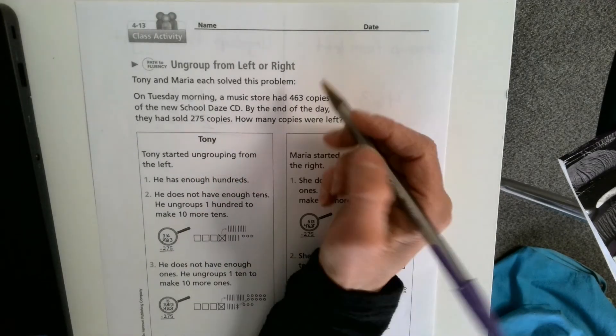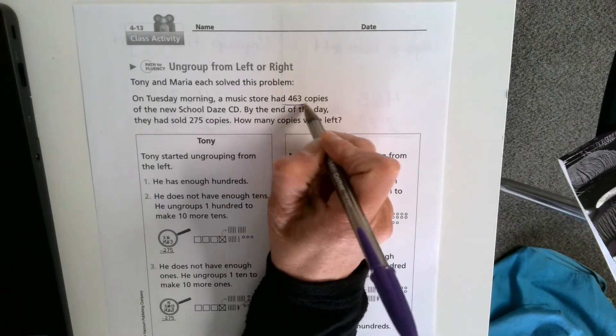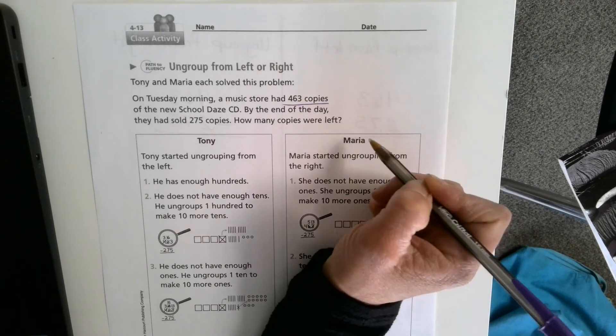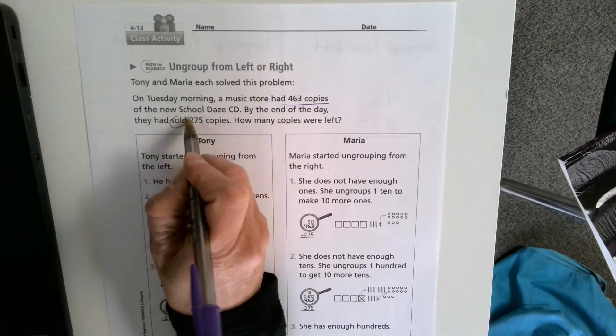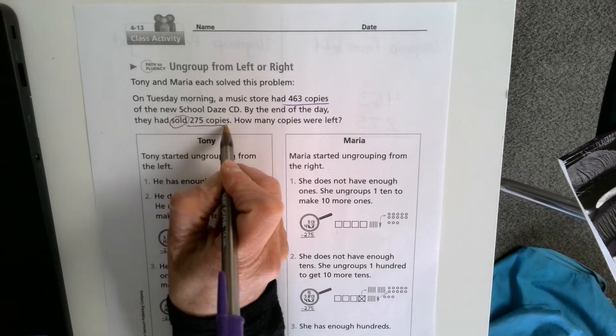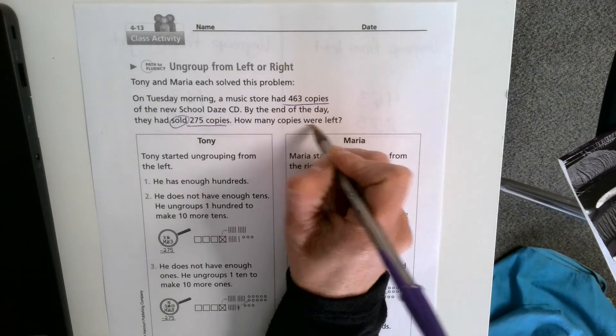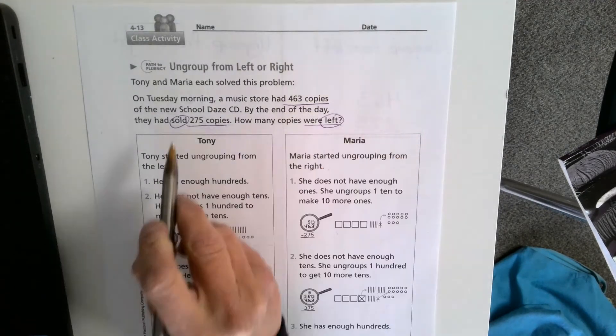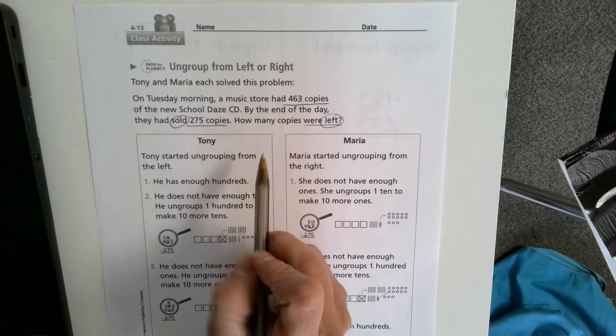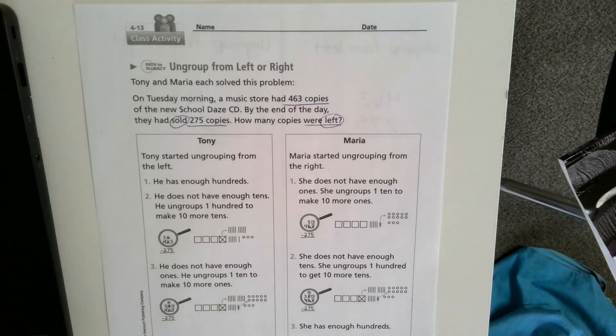How many copies were left? If I underline my important information, I know that they started with 463, but they sold, which is the key word, 275 copies. The question is how many copies were left. As I visualize this music store selling CDs, I can tell that I am going to be subtracting.